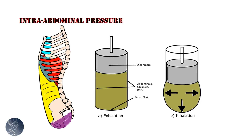If the abdominals and/or pelvic floor are contracted, the descent of the diaphragm is impeded by the increase in abdominal pressure. It should be noted that the pelvic floor and abdominals, specifically the transversus abdominis, co-contract.